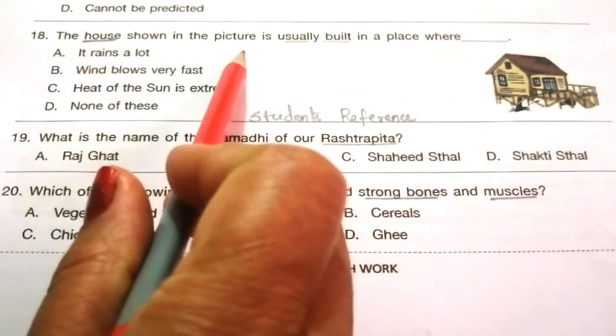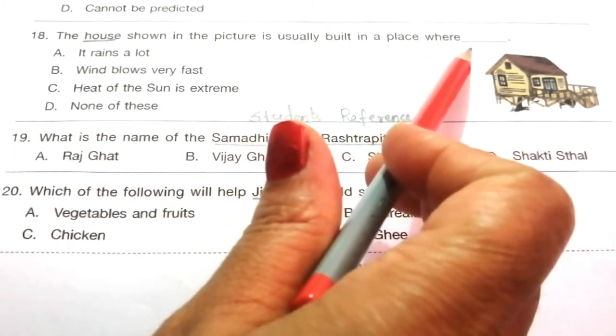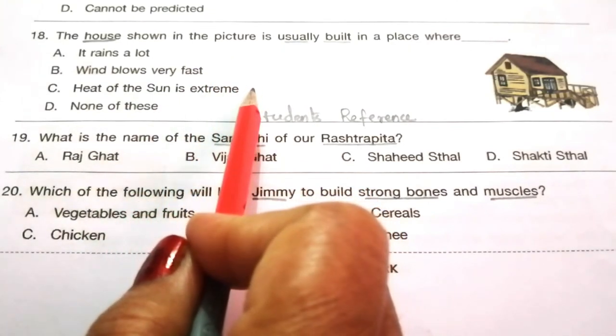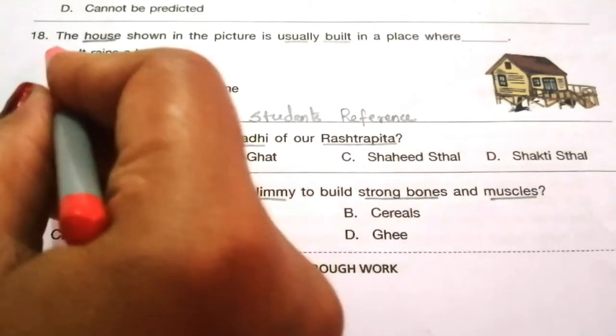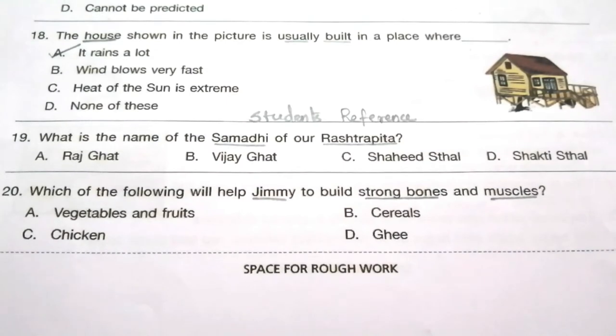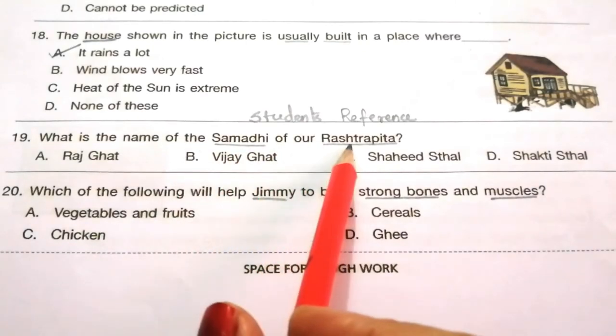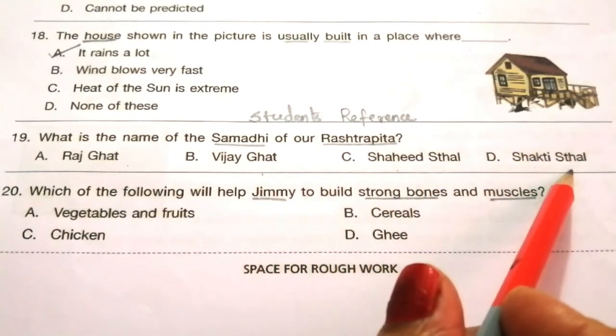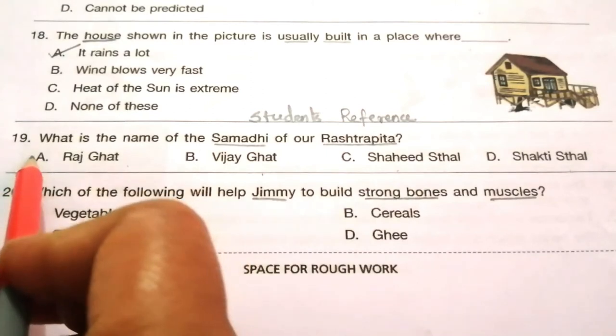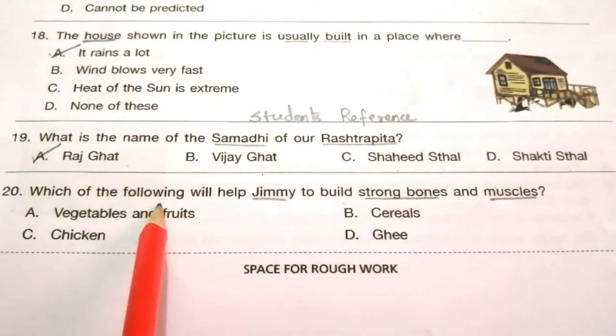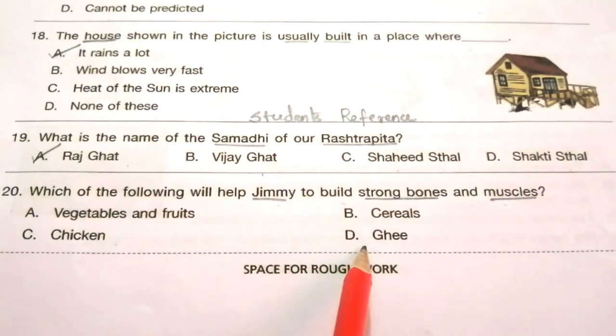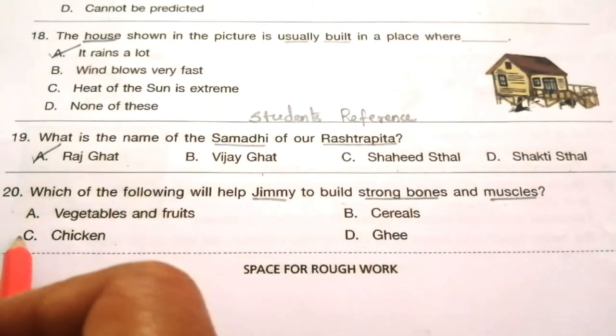Question 18: The house shown in the picture is usually built where it rains a lot, wind blows fast, heat is extreme, or none of these. The answer is A, it rains a lot. Question 19: What is the name of the Samadhi of our Rashtrapita? Question 20: Which will help Jimmy build strong bones and muscles? Vegetables and fruits, cereals, chicken and ghee. The answer is C, chicken.